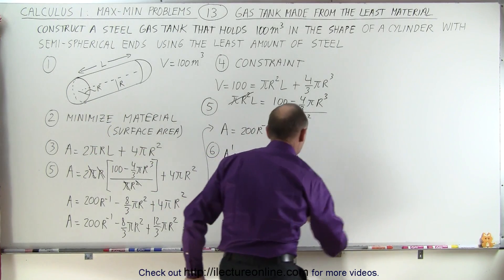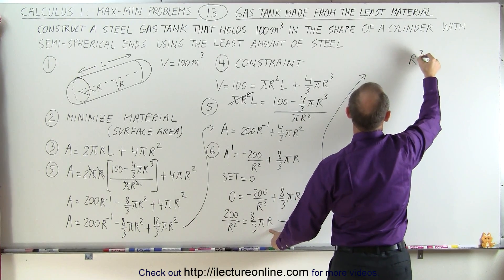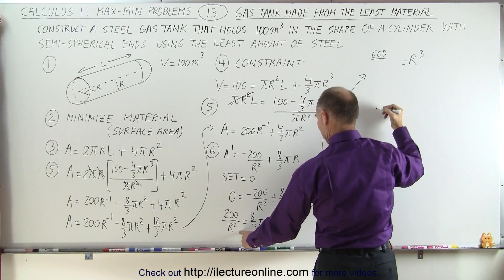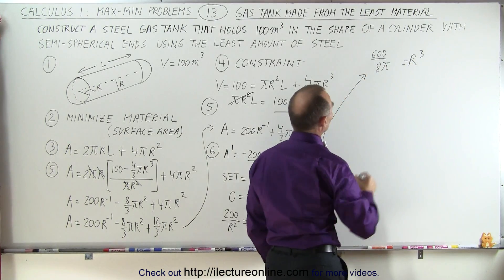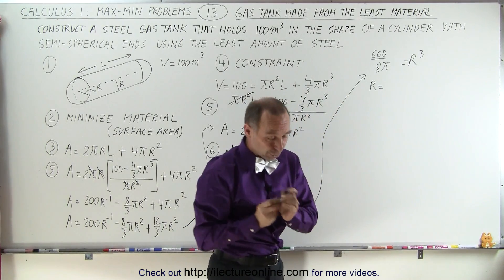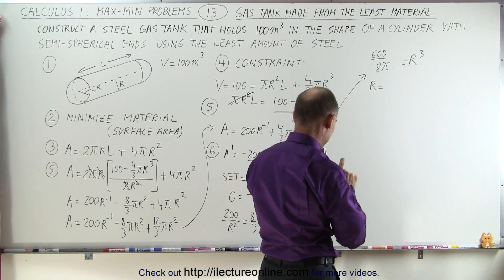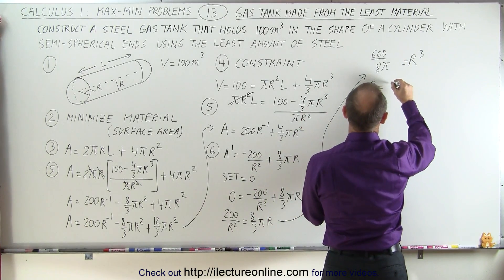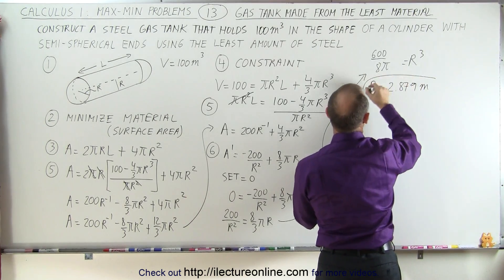Rearranging terms, the equation becomes r³ equals 3 times 200 divided by 8π, which is 600 divided by 8π. Now we take the cube root: r equals (600 / (8π))^(1/3), and we end up with a radius equal to 2.879 meters. That is the radius of the tank.